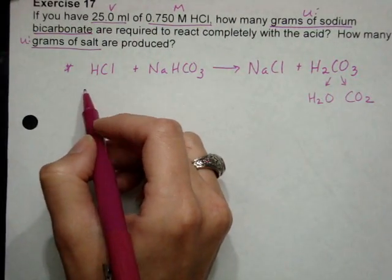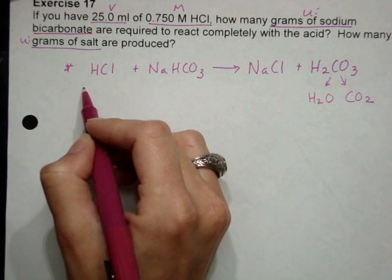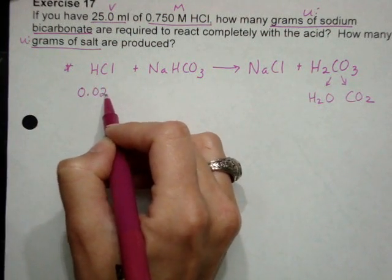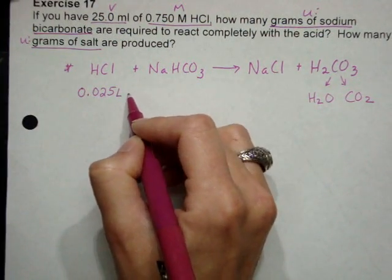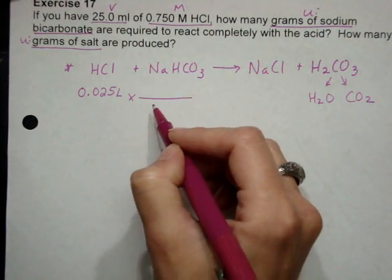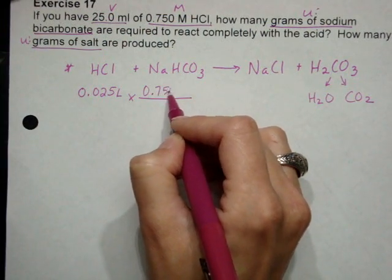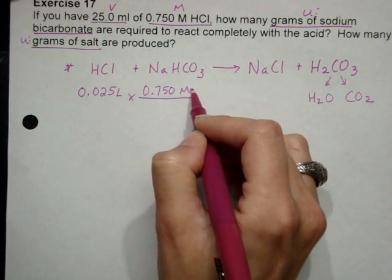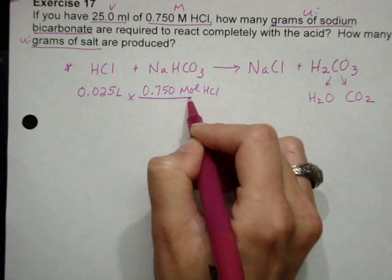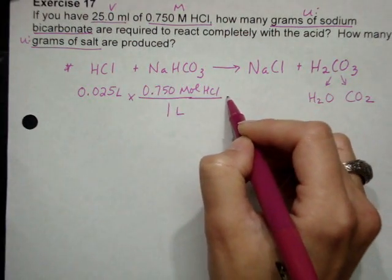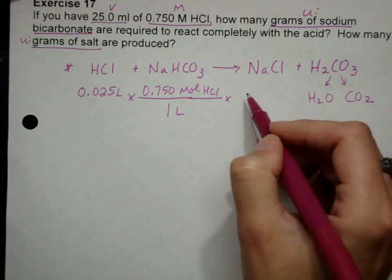I can start off with what I'm given, which is 25 milliliters, which is 0.025 liters, just divide by 1,000 there and move the decimal over three places. And then I have 0.750 molar, which is moles of HCl per liter. Uh-oh, I'm going to run a space.